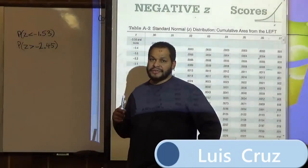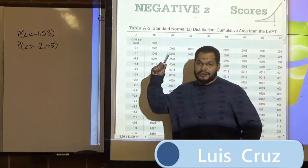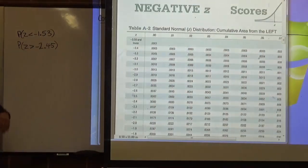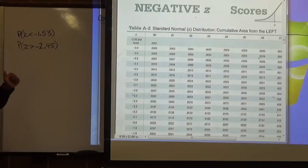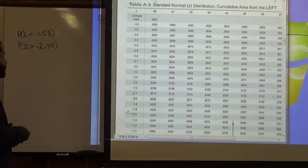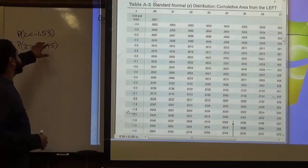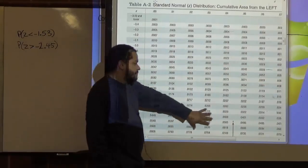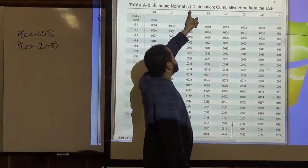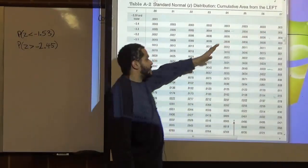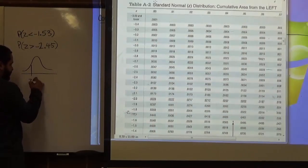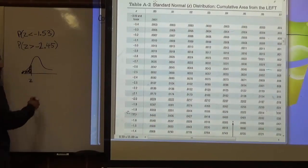Welcome to HelpYourMath.com. In this video, we're going to talk about acquiring the value of z-scores. Here we have two z-score areas that we want to calculate. The standard normal z-distribution table shows cumulative area from the left — meaning whatever the z-score mark is, the table gives us the area corresponding to the left side of that z-score.